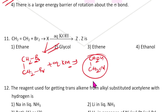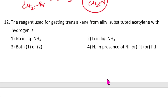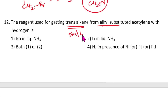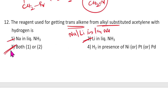The reagent used for getting trans-alkene from alkyl-substituted alkynes: always remember — sodium or lithium in liquid ammonia (Birch reduction). The answer includes both options one and two, so the answer is three.